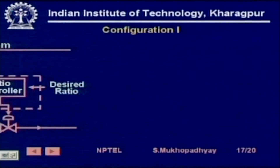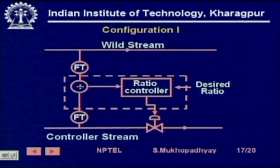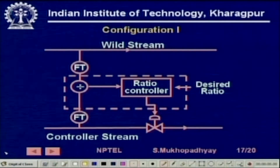It is in this situation that you apply ratio control. There are two typical configurations in which ratio control is used. In configuration one, you see that in ratio control we have two streams. The first one we call the wild stream.